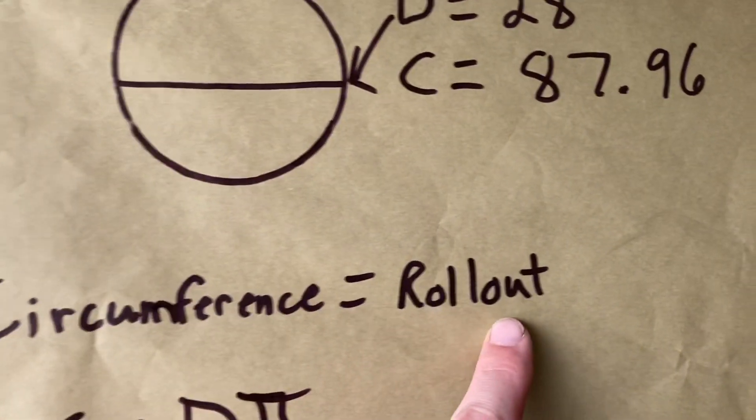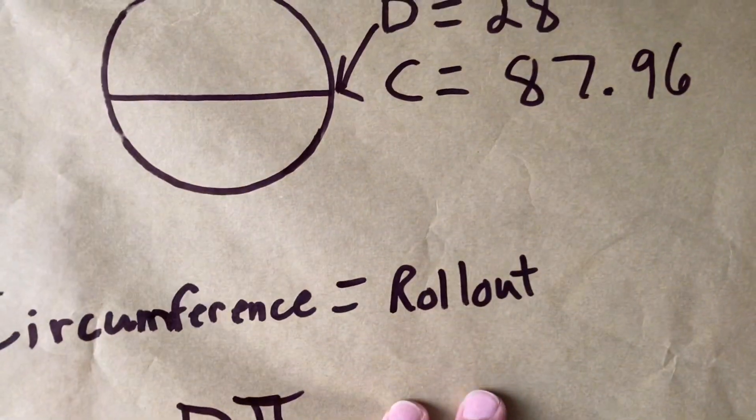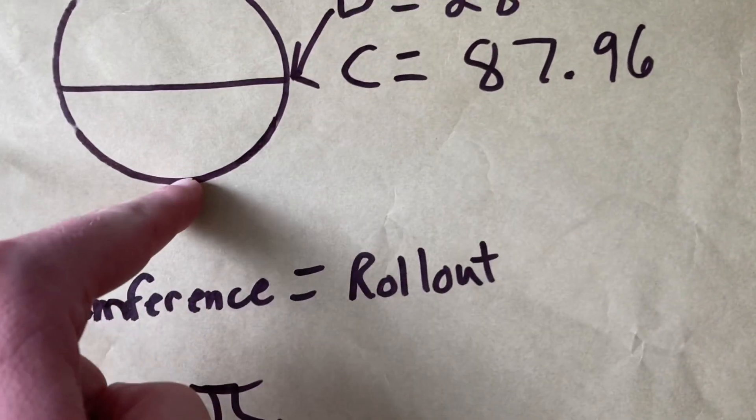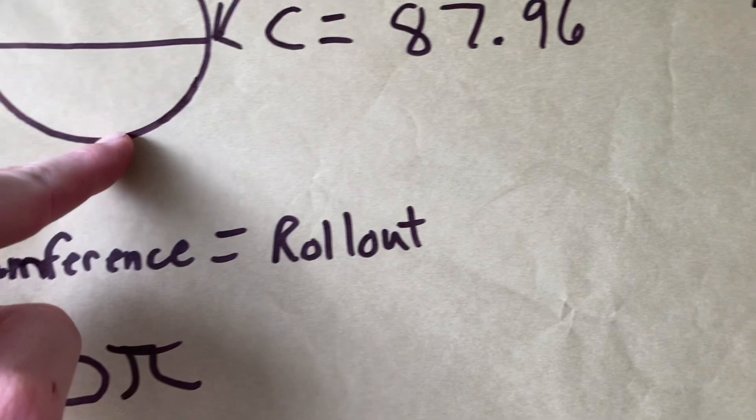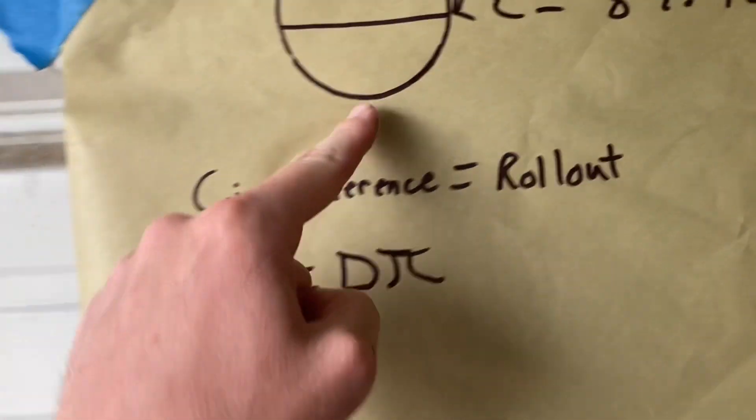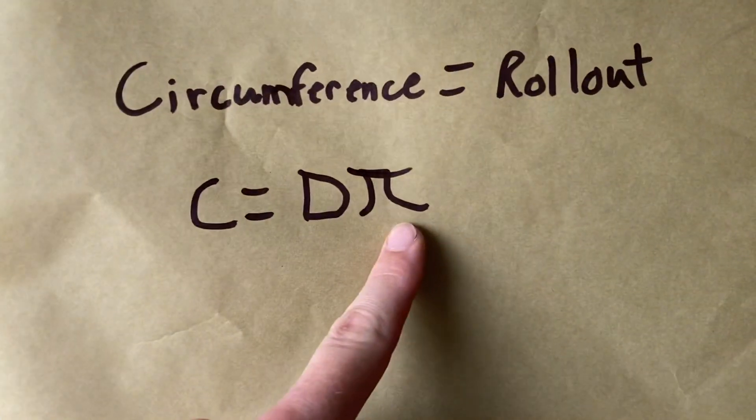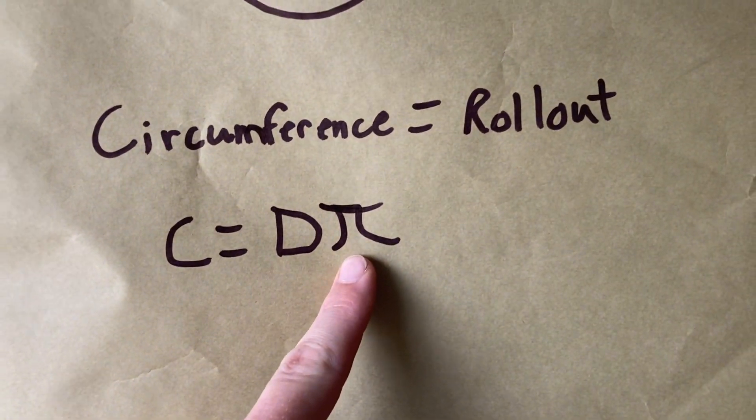Your circumference is actually the tire's rollout. So the amount, if it's with a tire on a racetrack, as it rolled, the distance it would have to roll all the way back to hit that mark. That's the circumference. Circumference equals the diameter times pi, and pi equals 3.14.